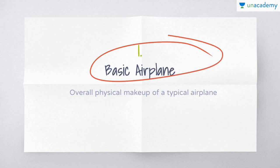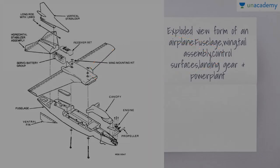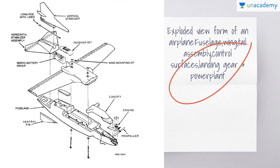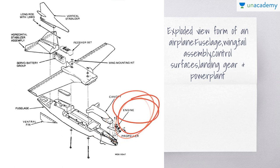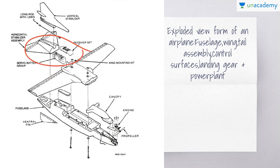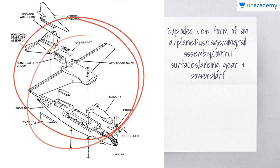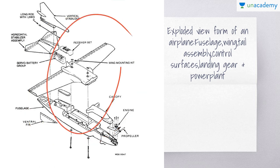A basic plane has its wing fixed to itself and does not have any moving wing like the helicopter, where the rotor blades rotate to provide lift. Here is the exploded view of the aircraft — all the different parts shown separately, such as the fuselage, the wing, the tail assembly, the control surfaces, the landing gear, and the power plant. The horizontal tail and vertical tail together form the empennage. This is how the airplane assembly is done.